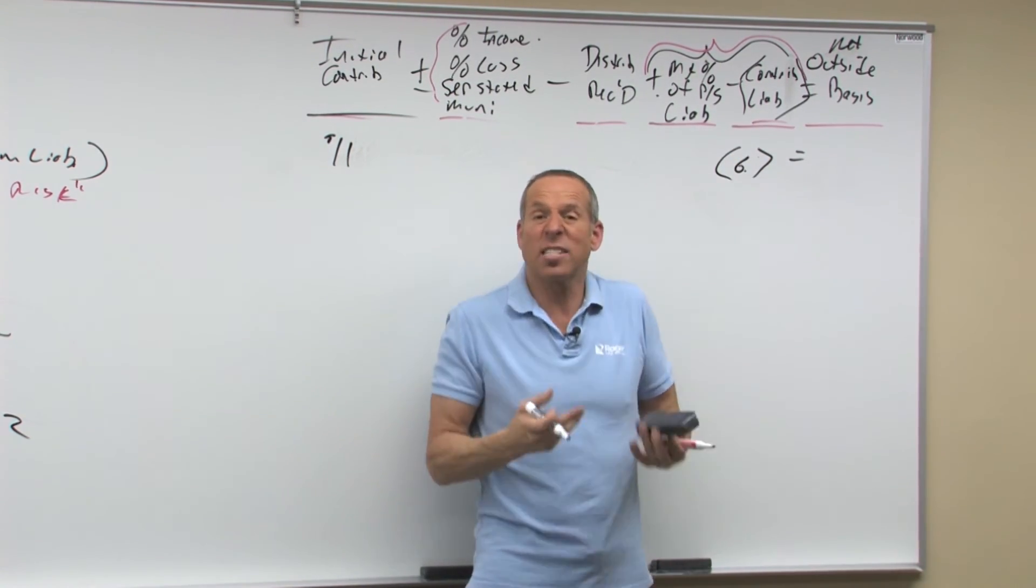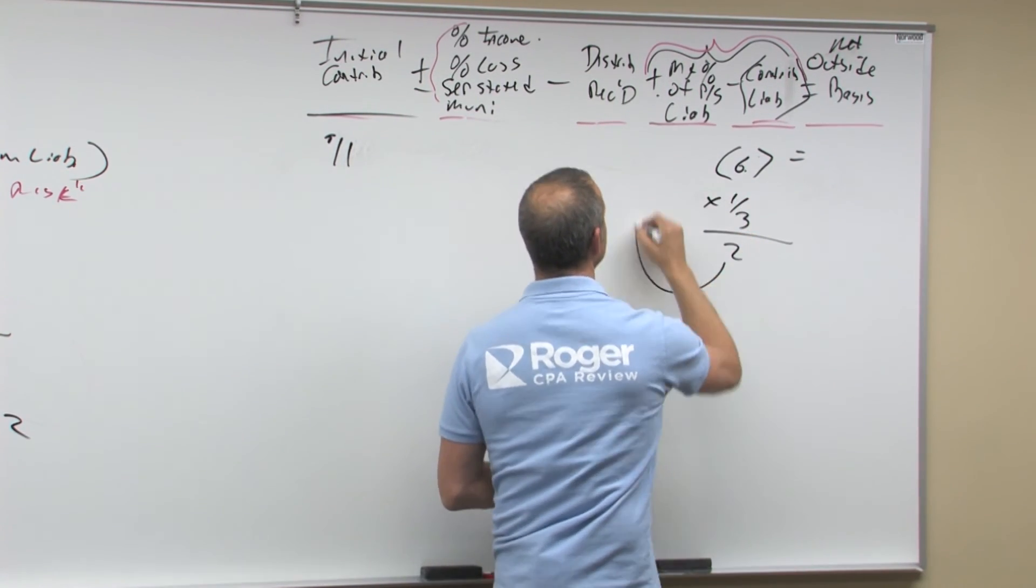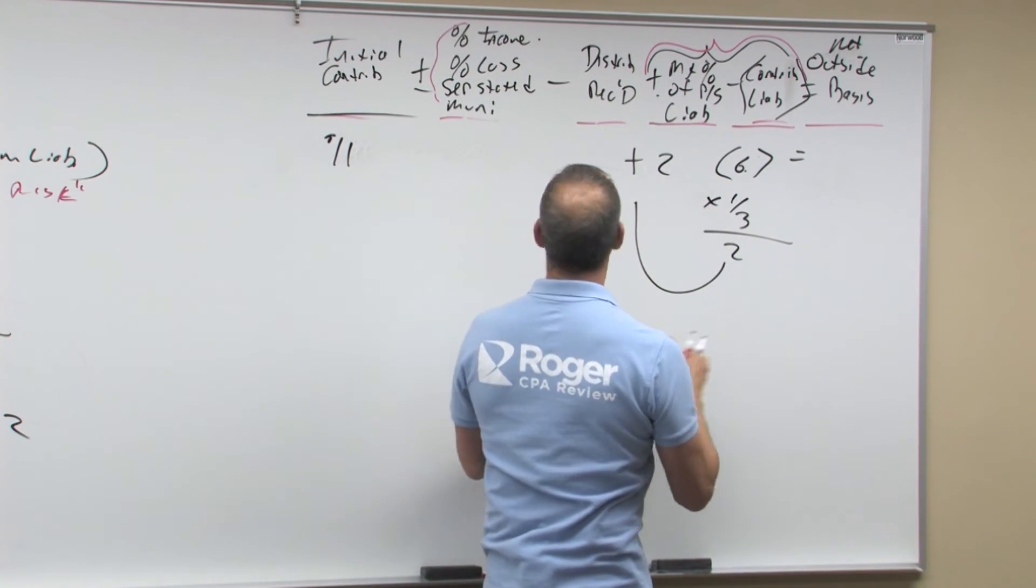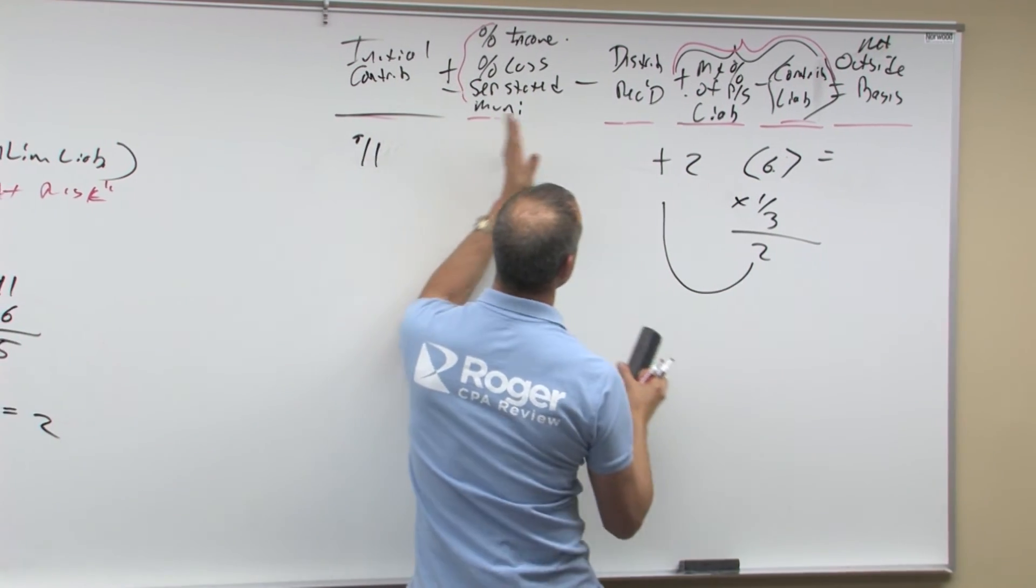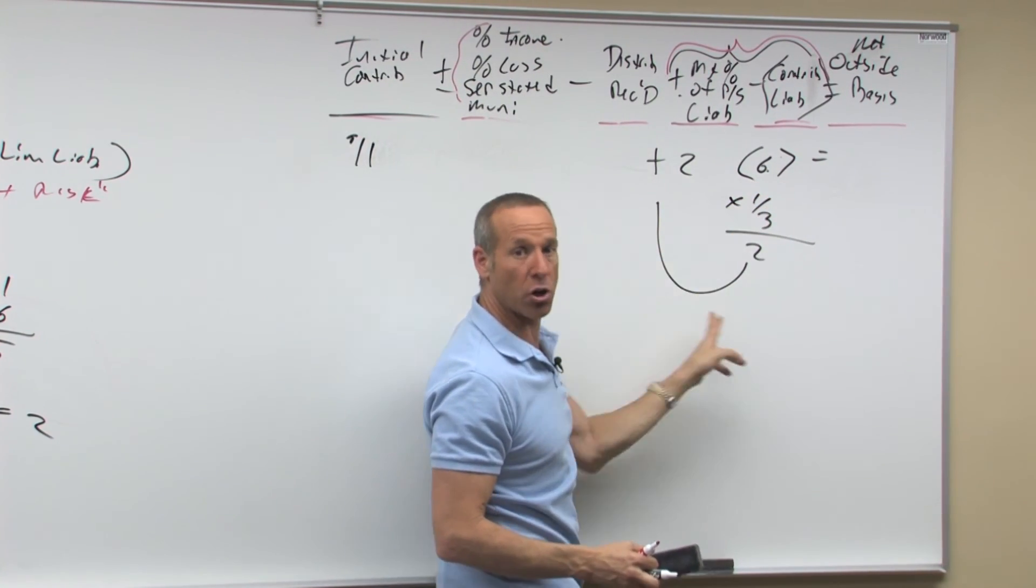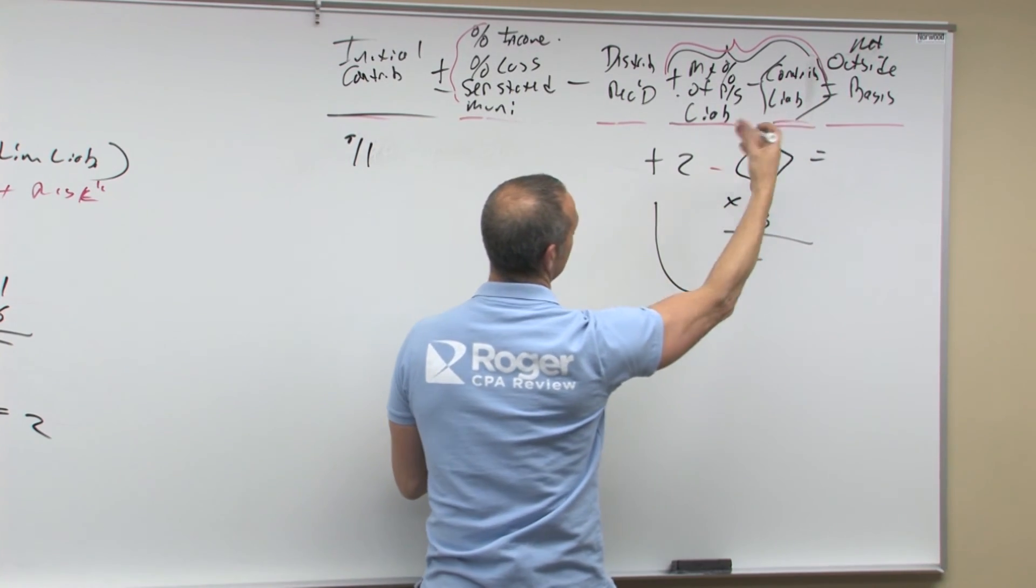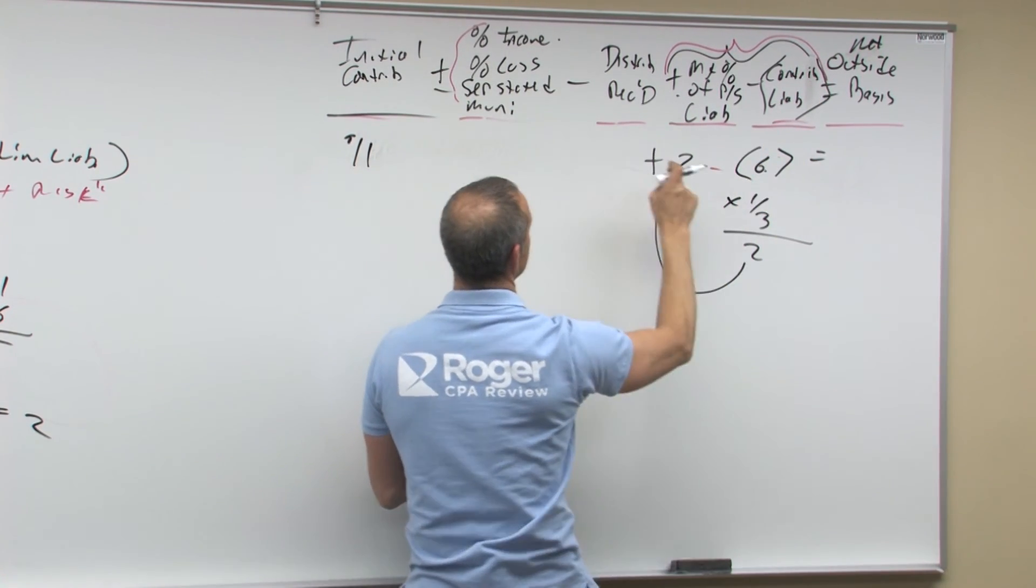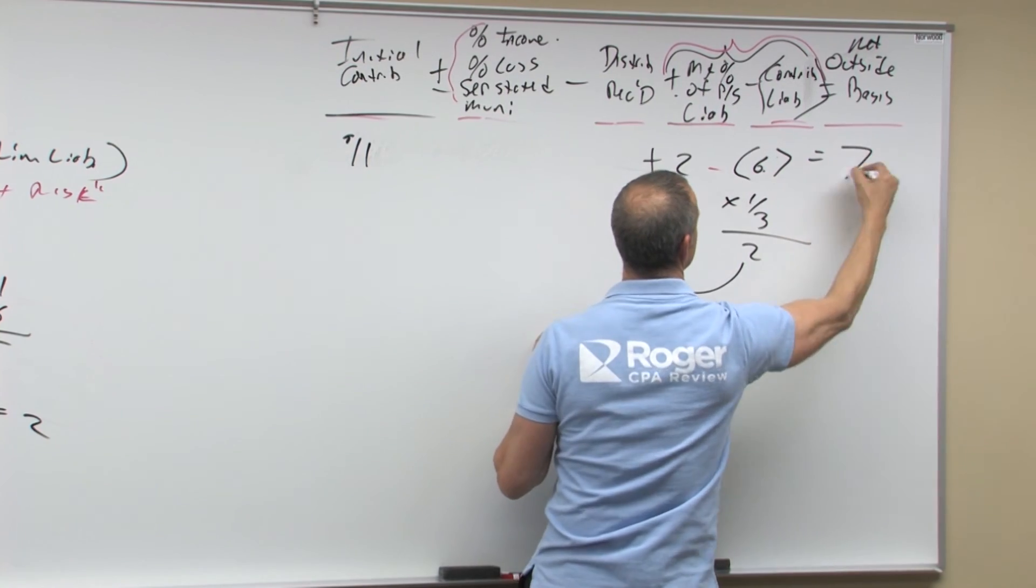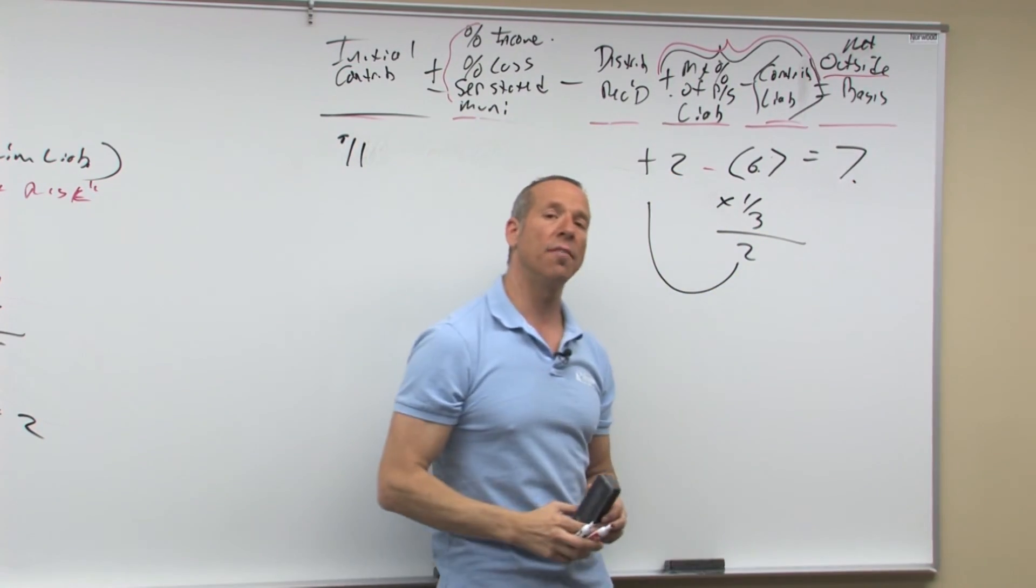Therefore that's two, so that's plus two. So my initial was 11, my percent of the partnership liability, which is six, is a third or two, but I gave up the six because that's what I contributed liability that the partnership assumed. 11 plus two is 13, minus six is seven. That is my net outside basis. They love to test that.